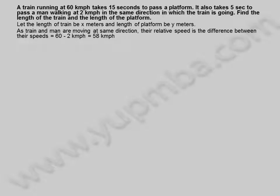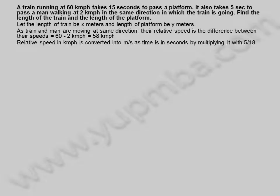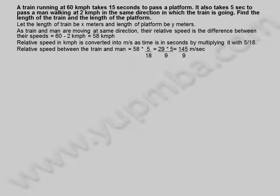As train and man are moving in the same direction, their relative speed is the difference between their speeds: 60 minus 2 kilometers per hour equals 58 kilometers per hour. Relative speed in kilometers per hour is converted into meters per second by multiplying with 5 by 18. Relative speed between the train and man equals 58 into 5 divided by 18, equals 29 into 5 divided by 9, equals 145 divided by 9 meters per second.